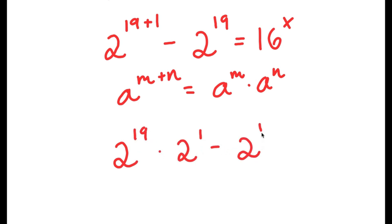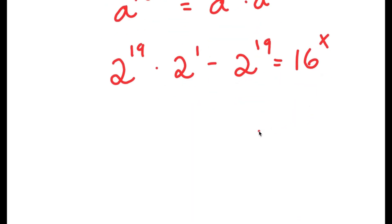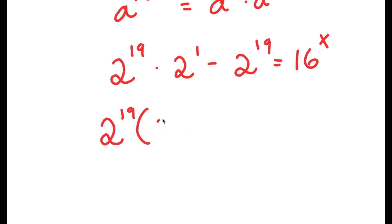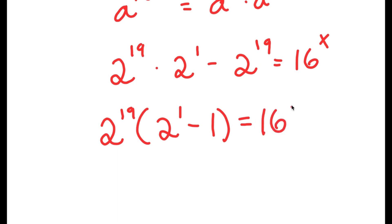Now I have this minus 2 to the power of 19 is equal to 16 to the power of x. If I factor out 2 to the power of 19 from my left hand side, I get 2 to the power of 19 times 2 to the power of 1 minus 1 is equal to 16 to the power of x.